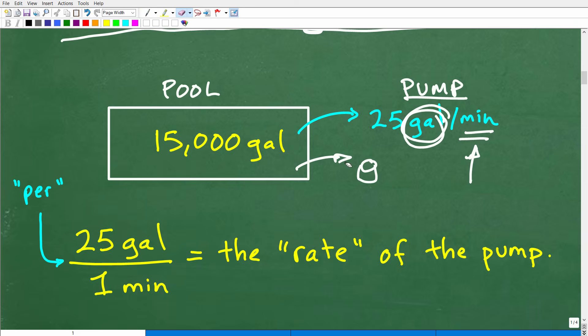Let's take a look at our pump information. We're being told that this pump can pump out 25 gallons per minute. And this word per, anytime you see this word per, where else would you see the word per, for example? How about this? 70 miles per hour.